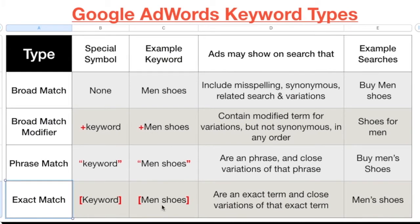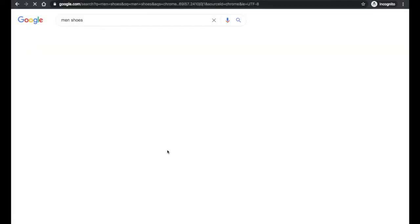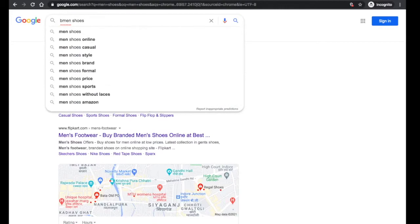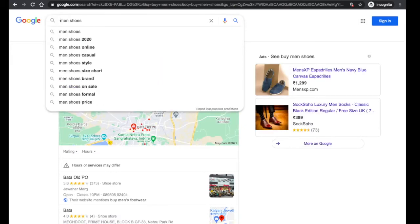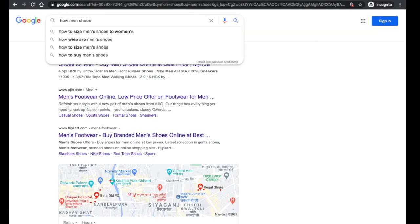When you put opening and closing square brackets around your keyword, it becomes exact match. You're telling Google: only show my ads when someone searches for exactly this keyword. So if someone writes 'man shoes,' your ad triggers. But if someone writes 'buy man shoes,' your advertisement will not show.